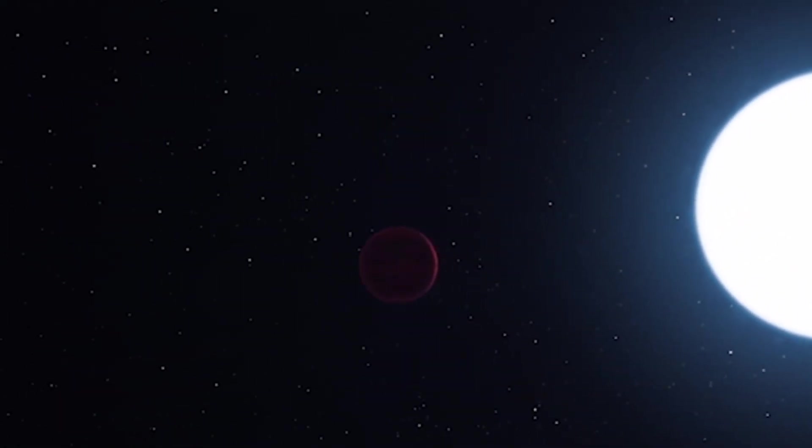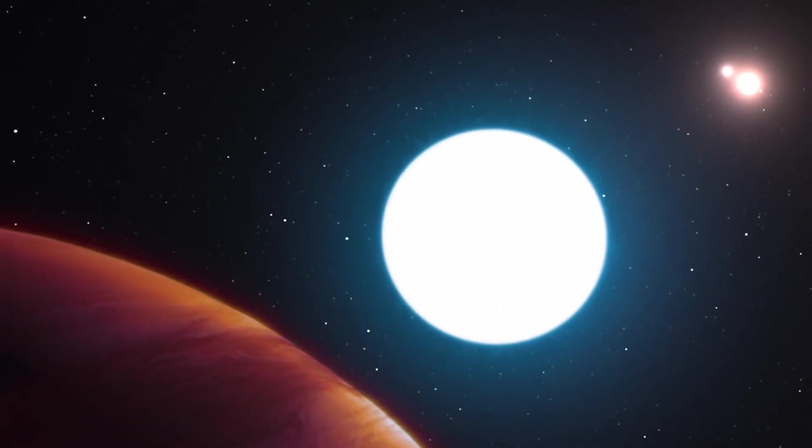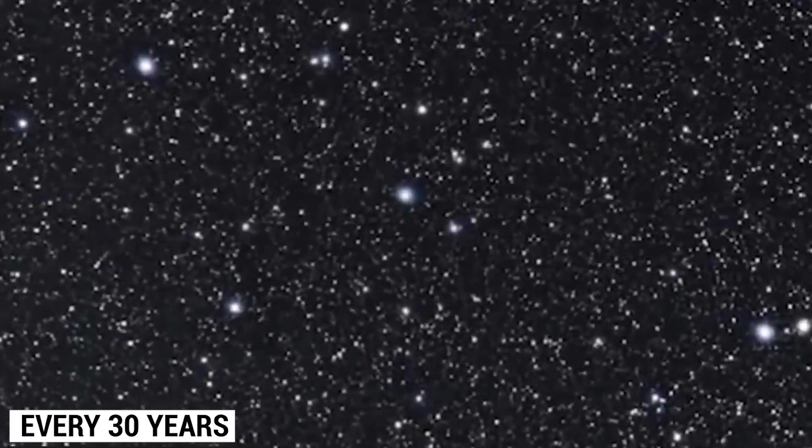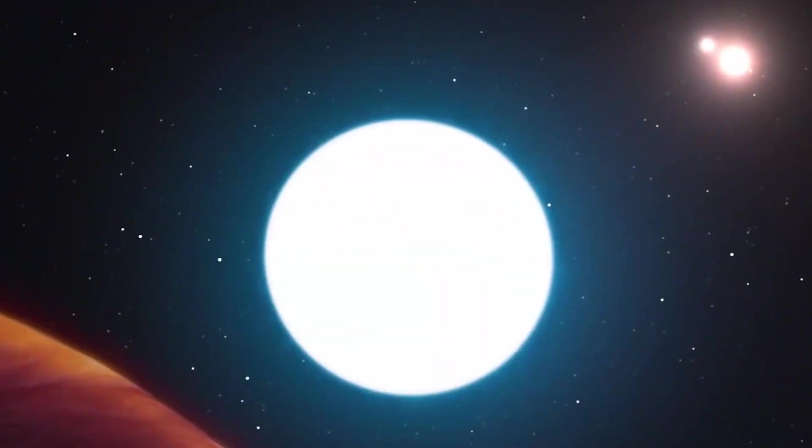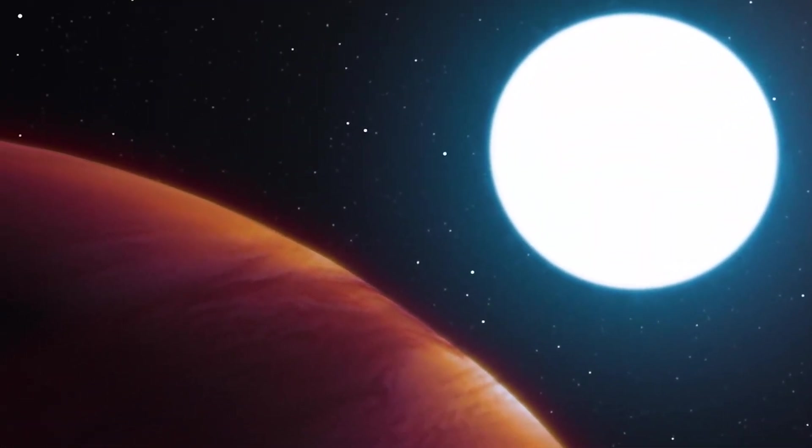Planet orbits star A, which has a near partner, star B. Every 30 years, they orbit one another. Star C is also gravitationally bound, and it circles A and B every 400 years.